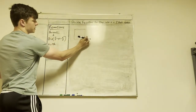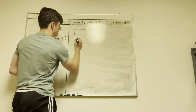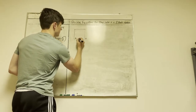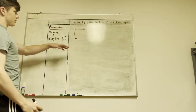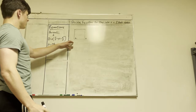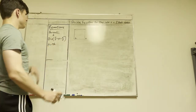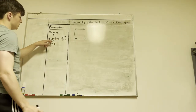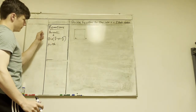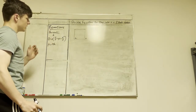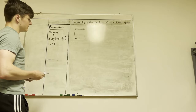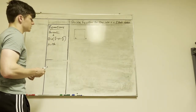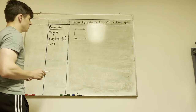We have an opening at the top and an opening at the bottom, and we'll put some random points — point one and point two. To solve this, we will need to use Bernoulli's equation, which is: the change in pressure over density, plus the acceleration due to gravity times some change in position, plus velocity squared divided by two.